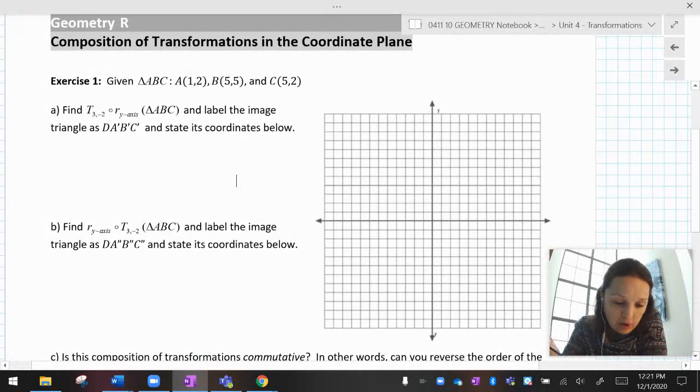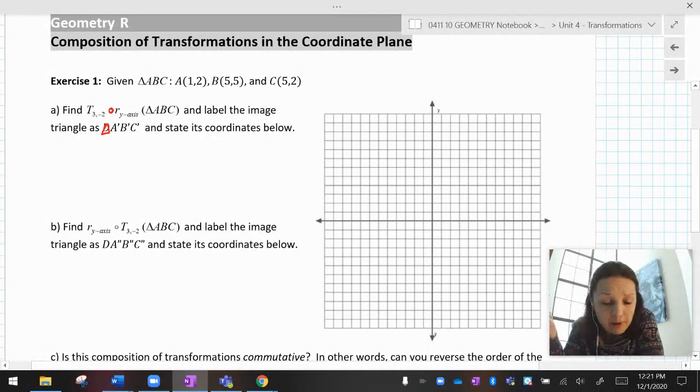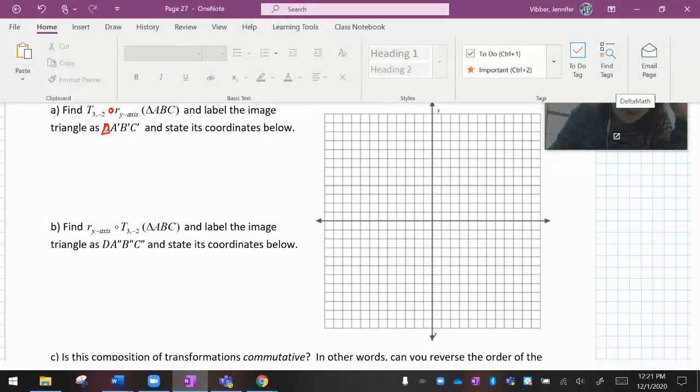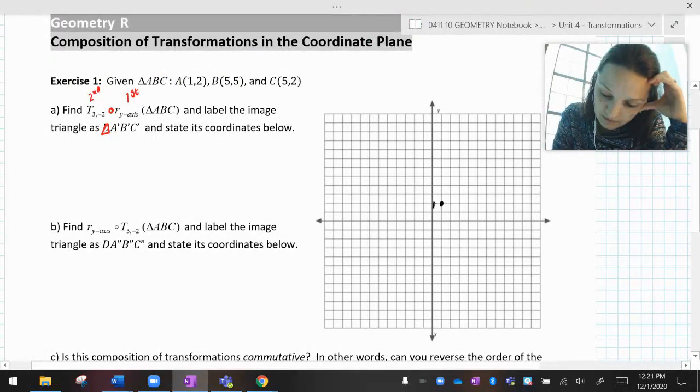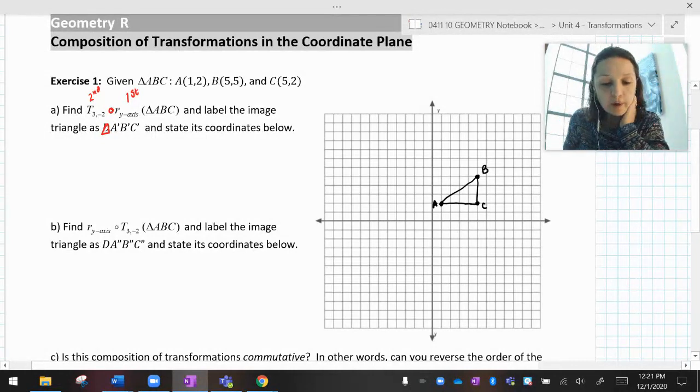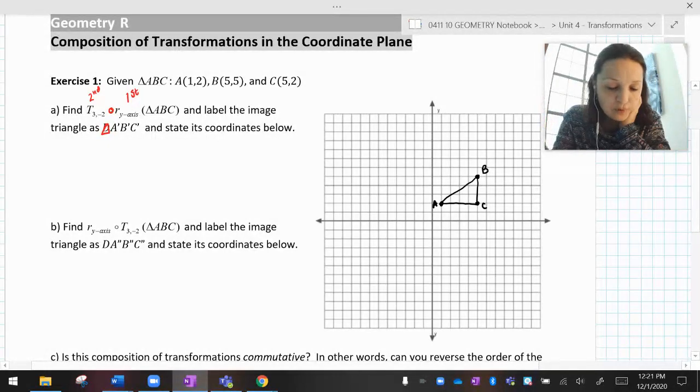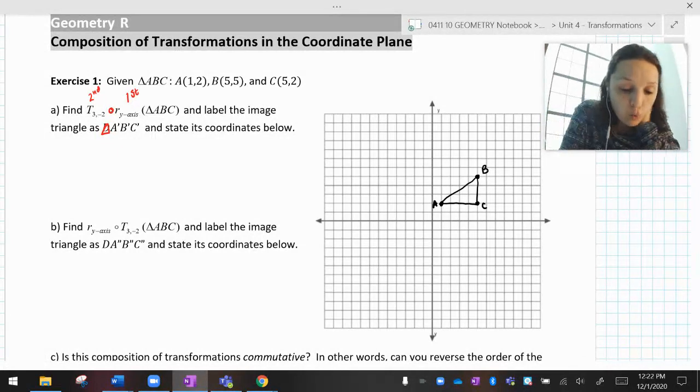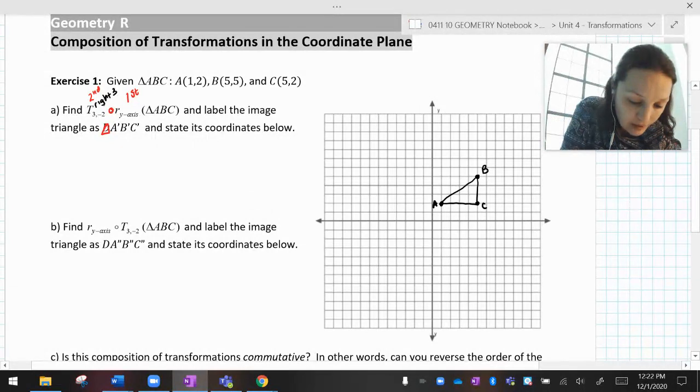So it says, given triangle ABC right here, find a translation of (3, -2) following a reflection over the y-axis of ABC, label the image. This should have a triangle symbol. One thing I notice is it's got that little bubble that reminds me that I have to work right to left. So we're going to reflect over the y-axis first and then translate second. I'm going to draw my original.